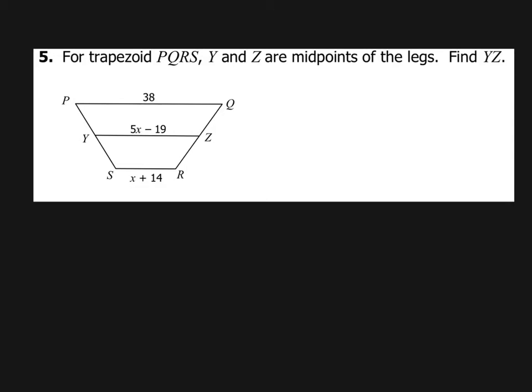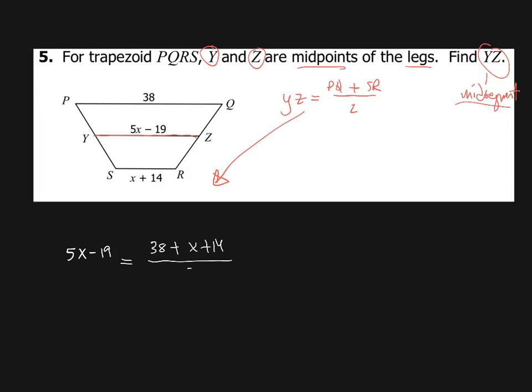Now, in this next problem, we're looking at a trapezoid where Y and Z are midpoints of the legs, which makes YZ a midsegment. So this is a midsegment, which means that YZ is equal to half of the sum of PQ plus SR. Let's come and do our algebra down here. And so we say YZ. So instead of writing YZ, we're going to say what it's worth, it's 5X minus 19. And what's that equal to? The sum of PQ plus SR, which is X plus 14, half of that.